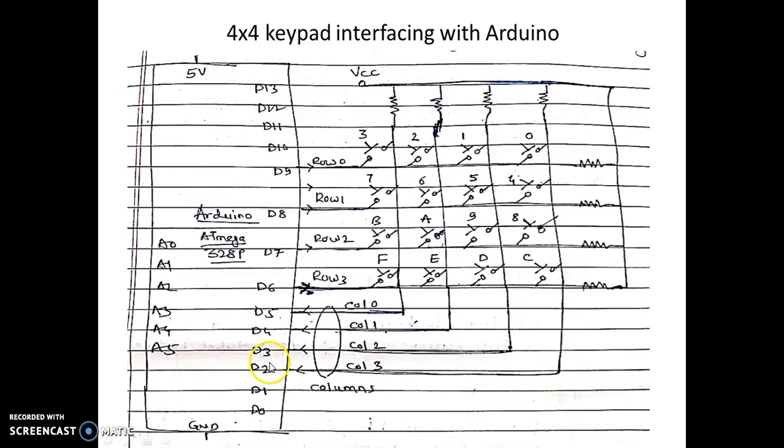So when any switch is pressed, there will be contact between the row and corresponding column pin and from that we can identify which key has been pressed. So this is the basic logic behind identification of key pressed.